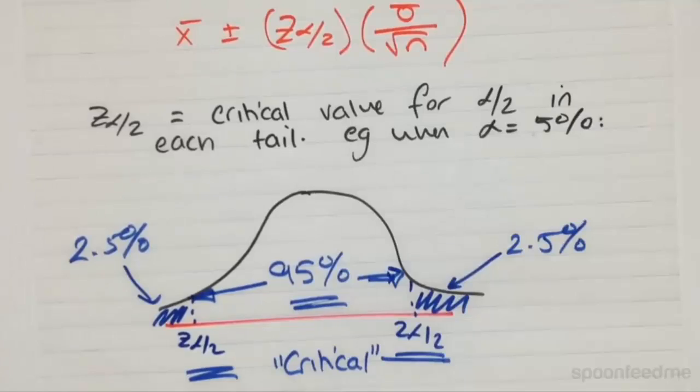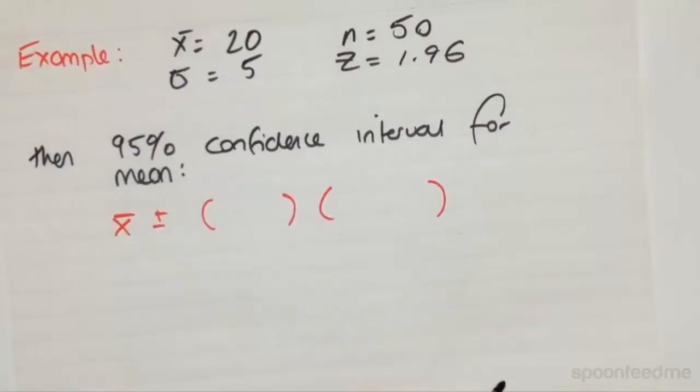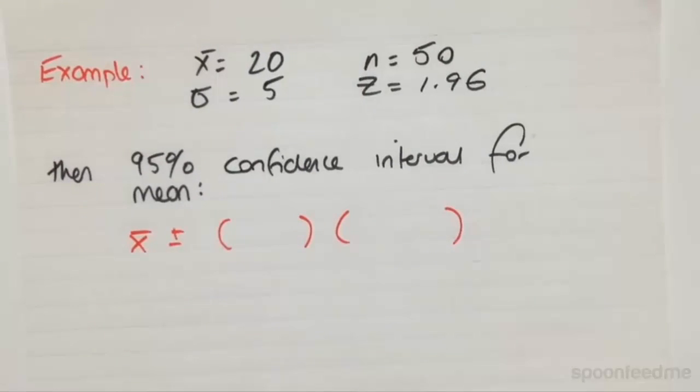So let's just look at a quick example, and hopefully you'll get the idea of what I mean by calculating a confidence interval when we know the standard deviation of the population.